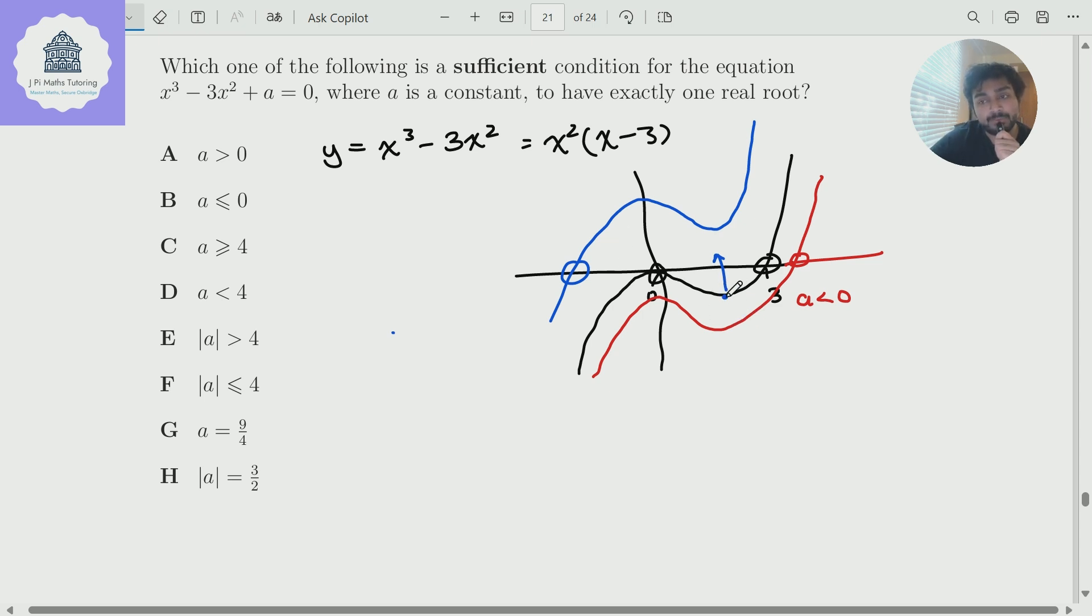Well, to do that, we just need to work out the turning point here. And that's not too difficult to do. We can just differentiate y in the black curve and use that to find the turning point. So we do that here.